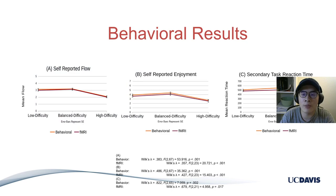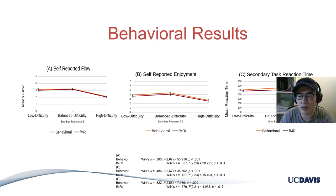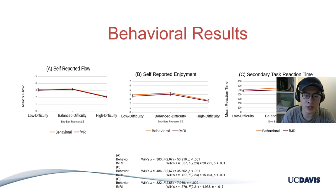Our behavioral results basically replicated previous findings: the self-reported flow, self-reported enjoyment, and the secondary task reaction time measure of attention all show a U-shape as a function of difficulty.